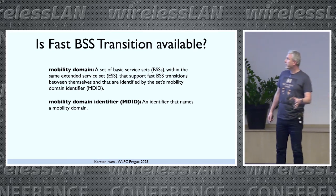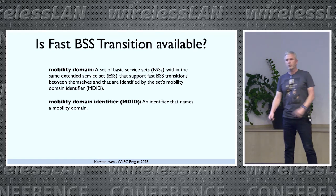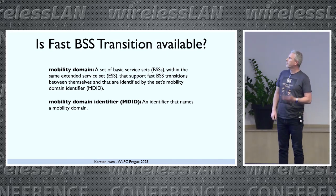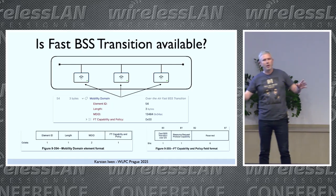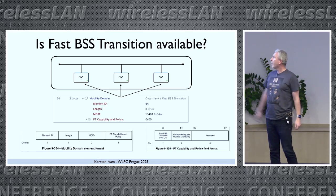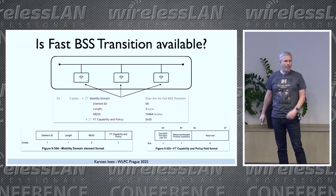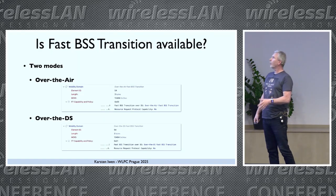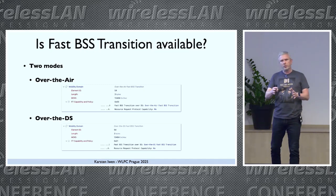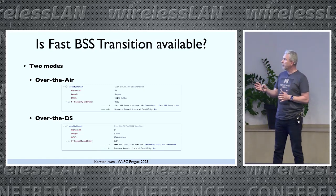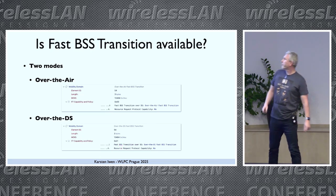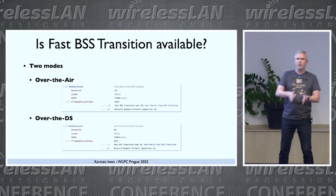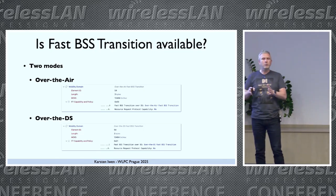How does our client know that we can use this? We have a new element: the mobility domain element. The main information is a mobility domain identifier — it's just a two-byte value. All our APs that want to provide this cooperative feature need to have the same mobility domain ID. Then we have two modes: over-the-air, which is typically used, where the whole roaming process is done with frames to the target AP; and the optional over-the-DS, which is only allowed if support is mentioned in our information element. There we start the roaming on the previous AP and continue on the target AP.